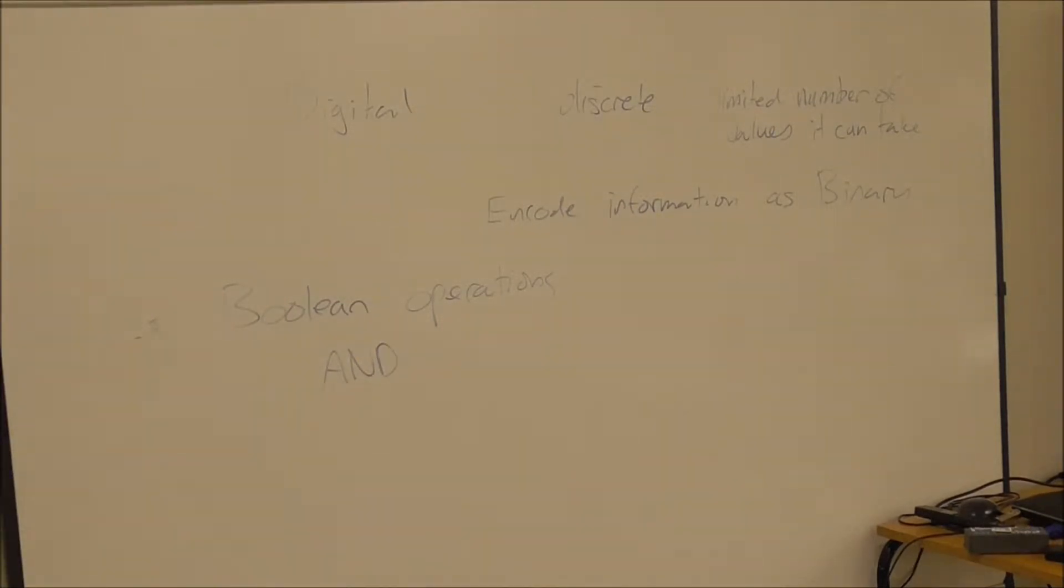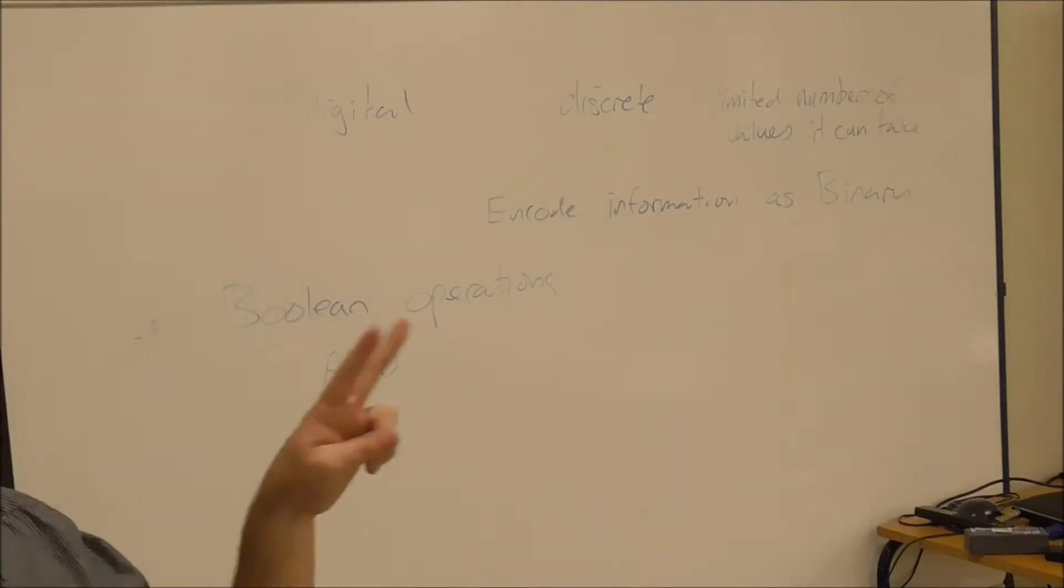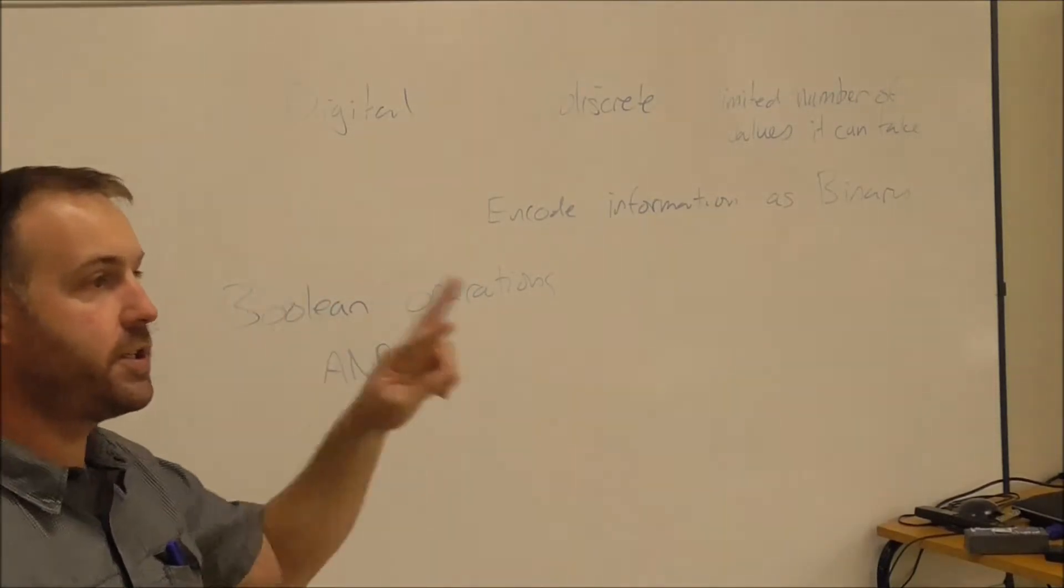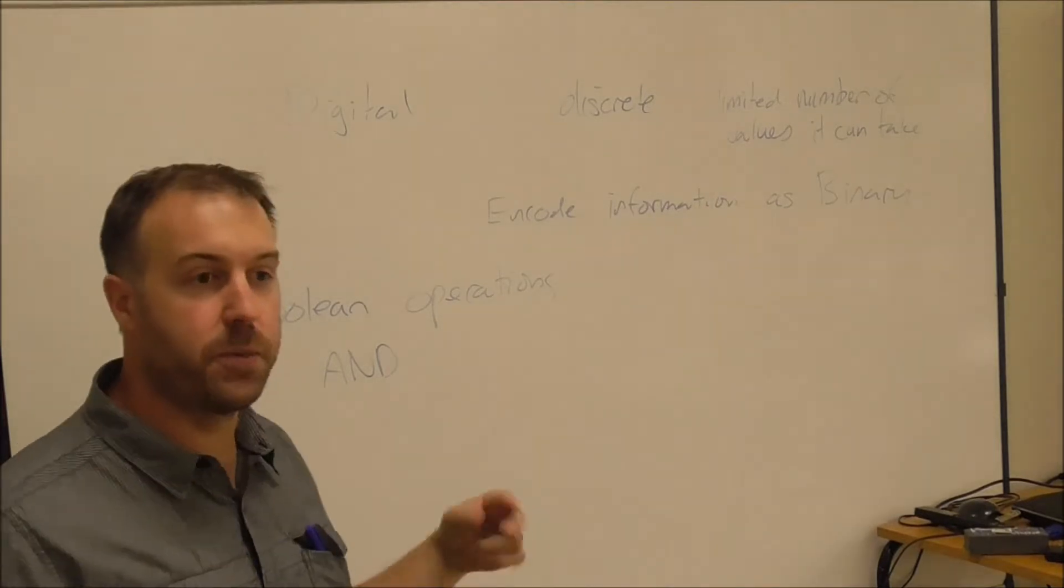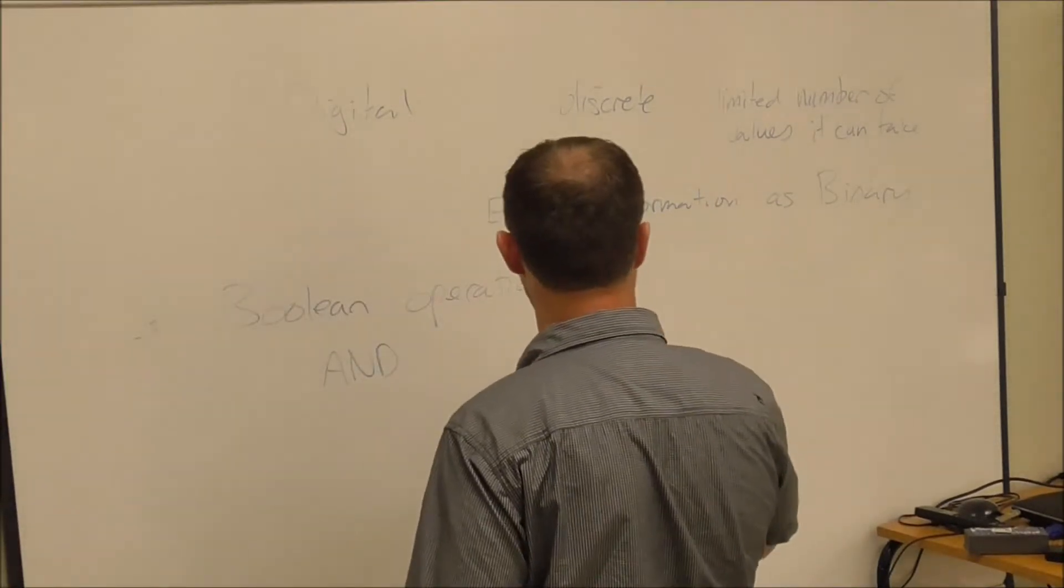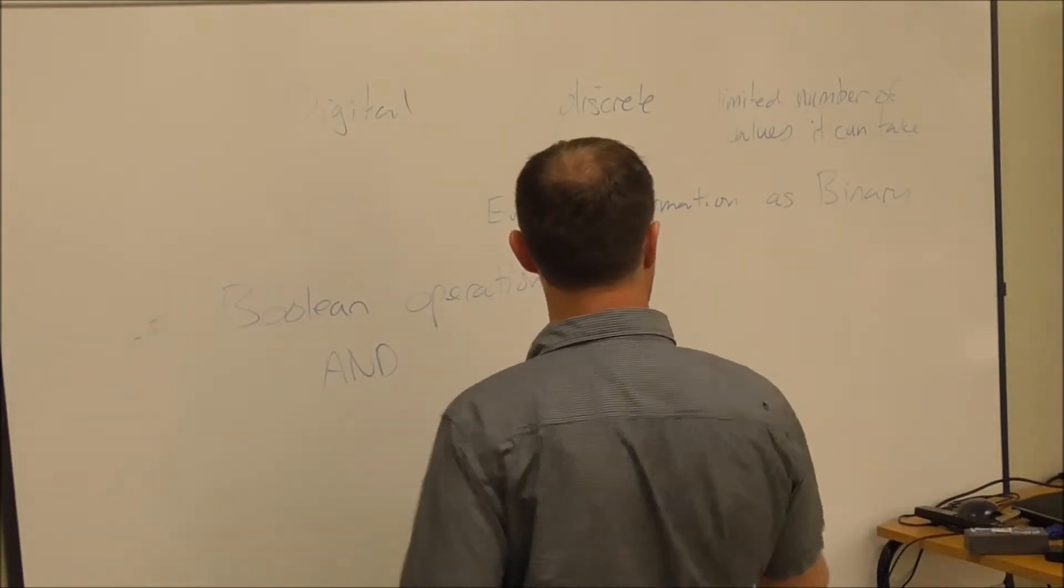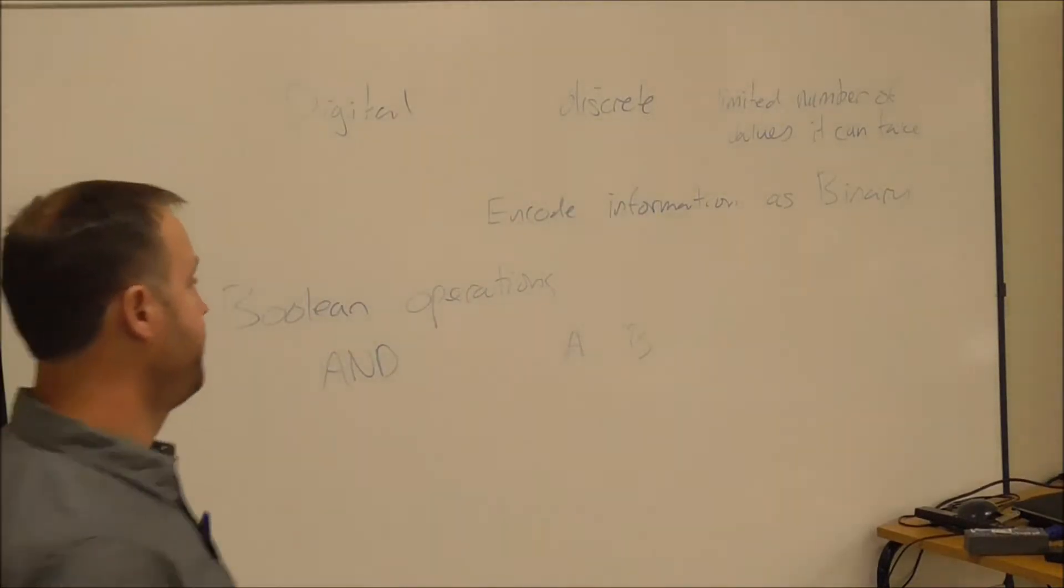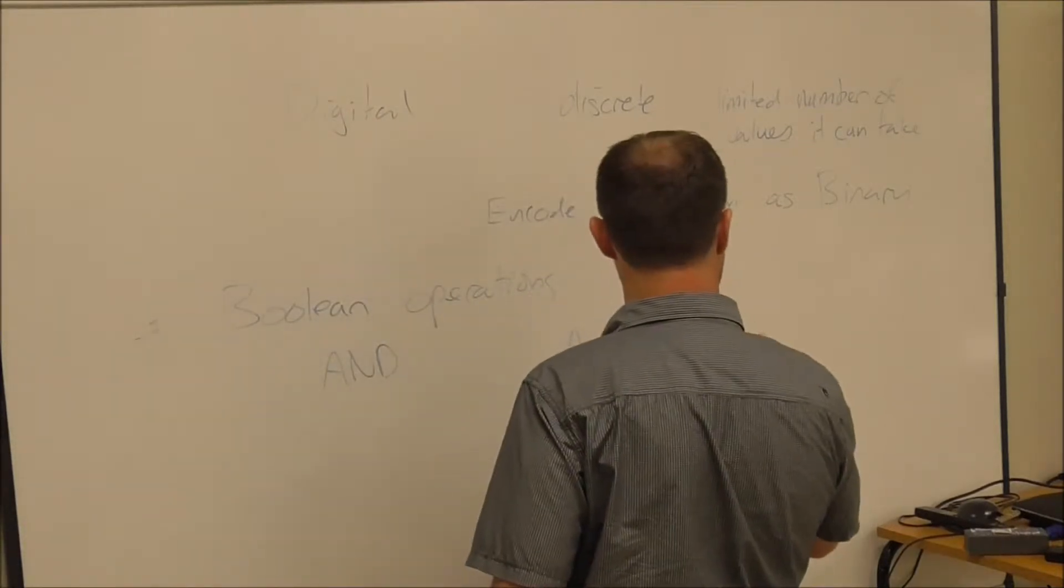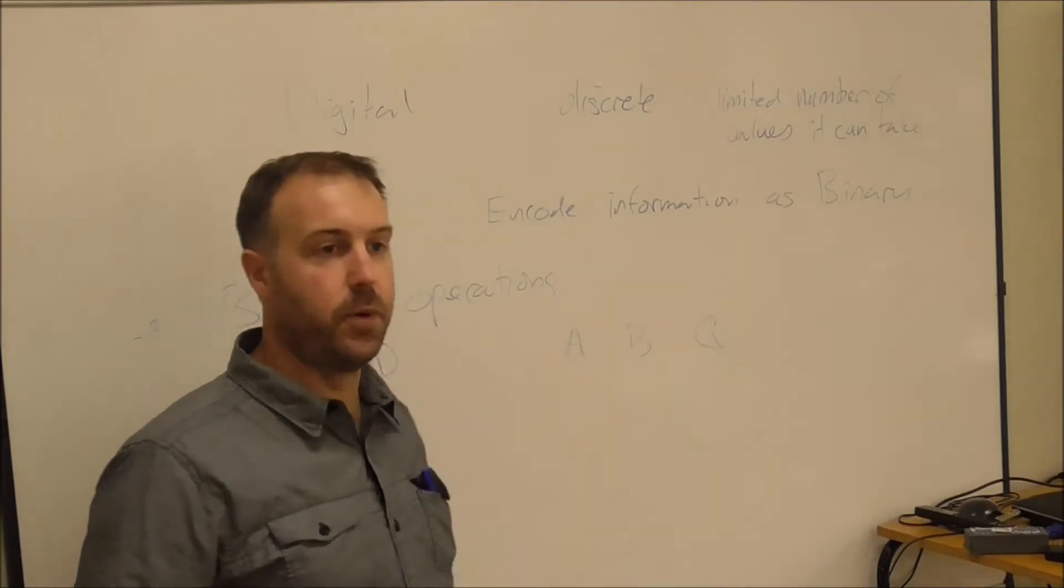The truth table is where if I look at an AND gate, I've actually got two inputs. So I list the two inputs and every possible state that those two inputs can make. I'm going to call my two inputs A and B and I'm going to call my output Q.